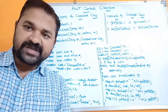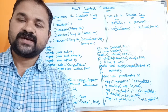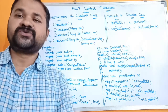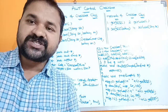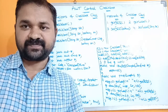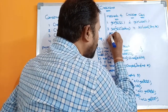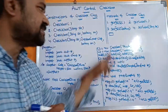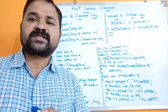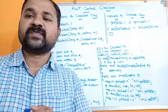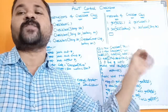In this video, we are going to discuss about AWT control checkbox. Checkbox allows us to select multiple options from the list of available options. Checkbox is represented with the help of a small rectangle. Every checkbox contains some label. That label describes information about the checkbox.